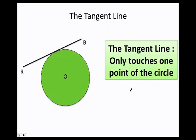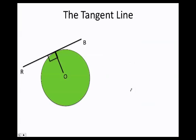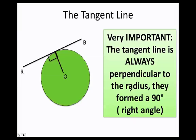The tangent line. Anytime you have a tangent line and a circle, that means they're touching one point, they're actually sharing each other one point. The tangent line only touches one point of the circle. However, one of the most important properties of the tangent line is that the tangent line will always be perpendicular to the radius. They form a 90 degree angle or what we call a right angle.